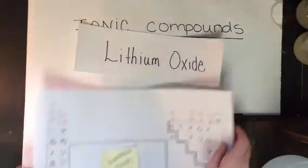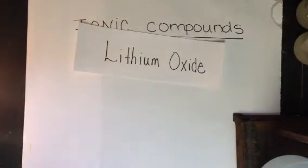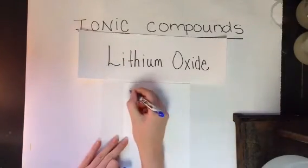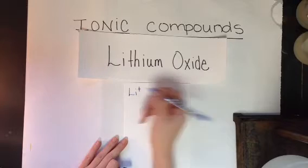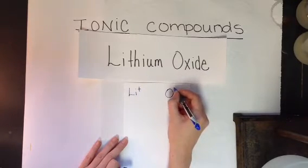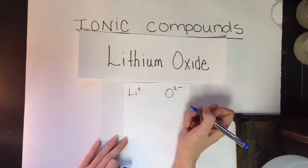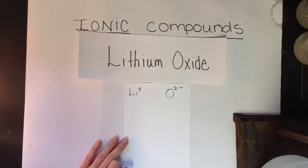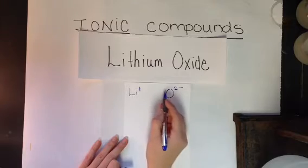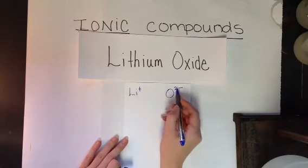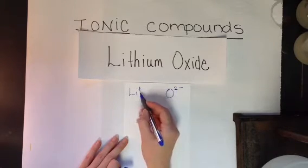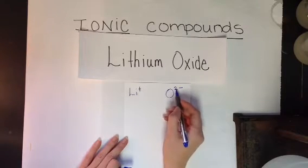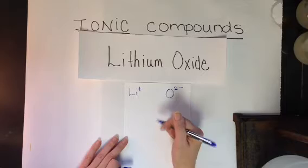Okay, so let's write that down. Again, lithium turns into a one plus ion. Oxygen turns into a two minus ion. Now, in order to write this formula, watch what I'm going to do here. I need to take these charges and balance them out. Meaning, I have to make them neutral. I have a plus one here and a two minus here. That's not neutral.